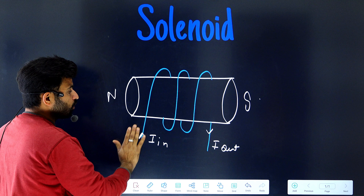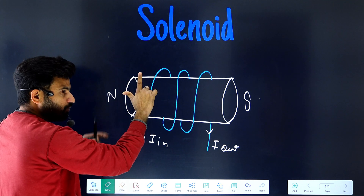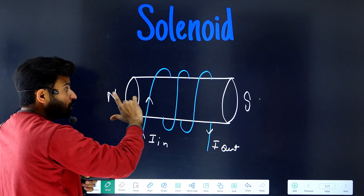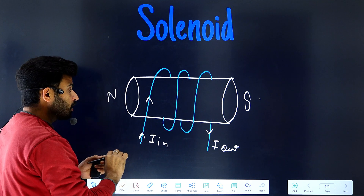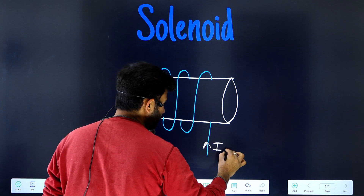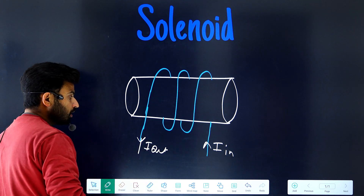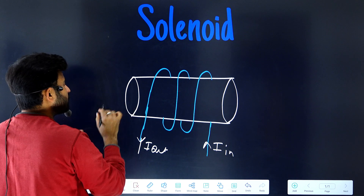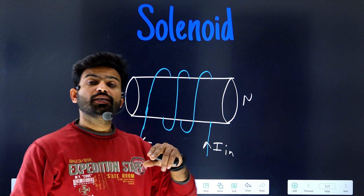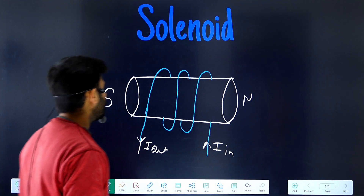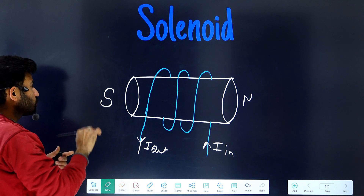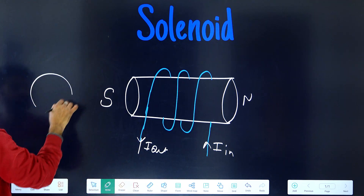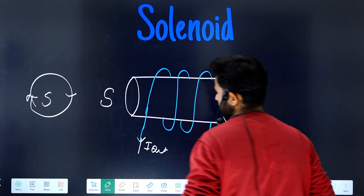In the fourth case, the current is going in from this side — current in — and coming out from the back side — current out. From the back to the front, this end is south — clockwise — and this end is north. You can also find this out easily using the clockwise and anticlockwise direction method. That is the complete way to find out the direction of the magnetic field in a solenoid.